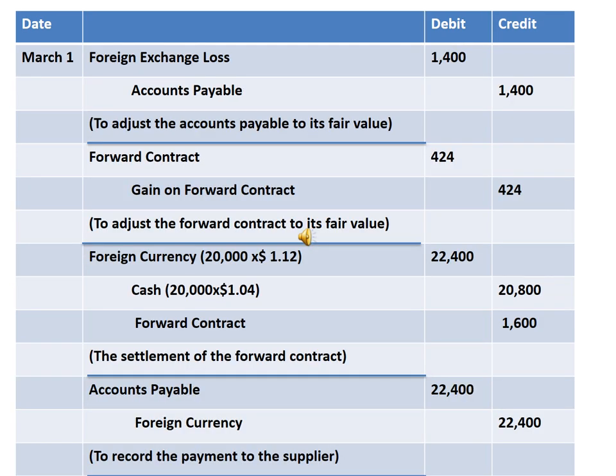On March 1st, which is the maturity date, we will record the loss from accounts payable and the gain from the forward contract. Finally, we will record the settlement of the forward contract by receiving foreign currency at spot rates and paying at forward rates, and then we will pay the accounts payable.